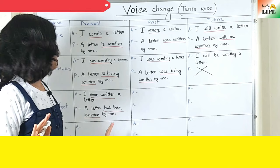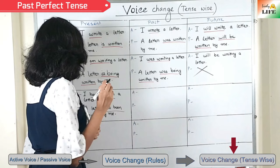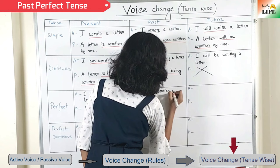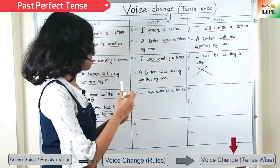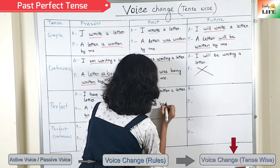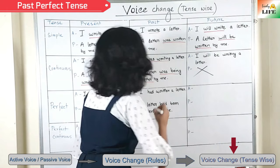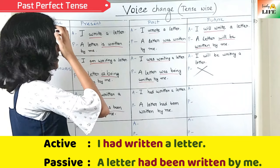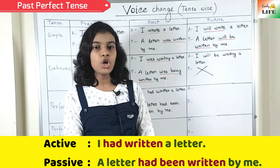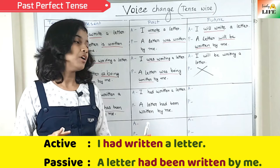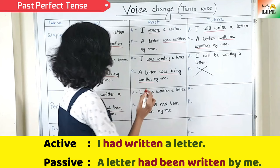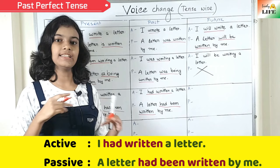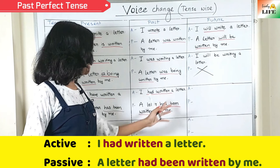Past perfect tense. Active voice: 'I had written a letter.' Passive voice: 'A letter had been written by me.' This is easier than present perfect because there is only one auxiliary verb: 'had' — it does not change to 'has' or 'have.' The only addition is 'been.' So 'had written' changes into 'had been written.' 'I had written a letter' → 'A letter had been written by me.'